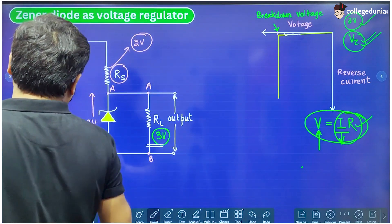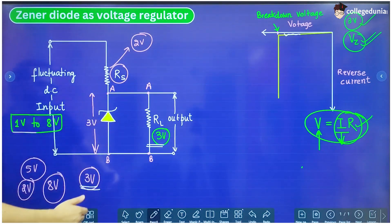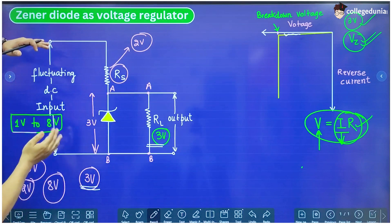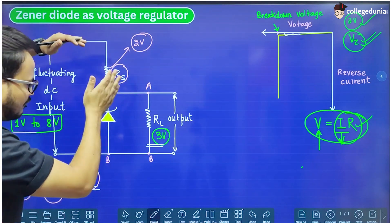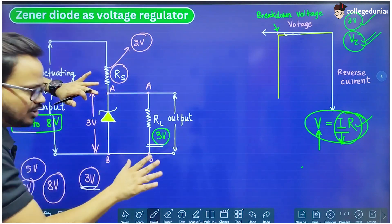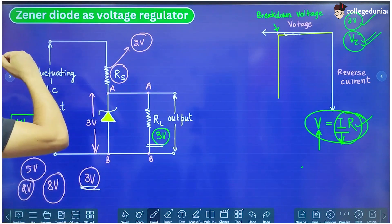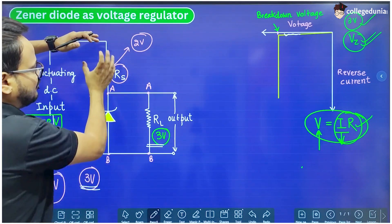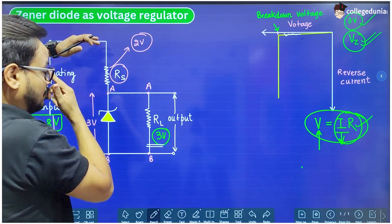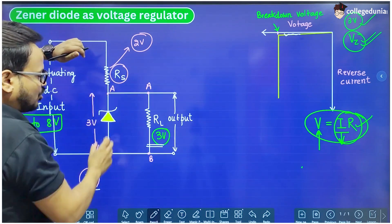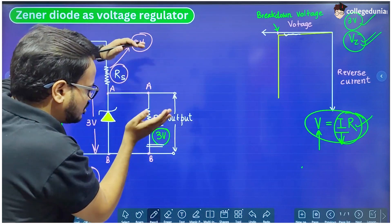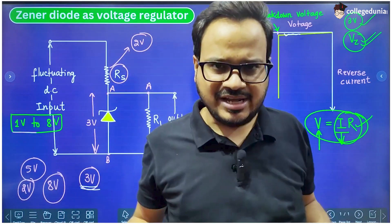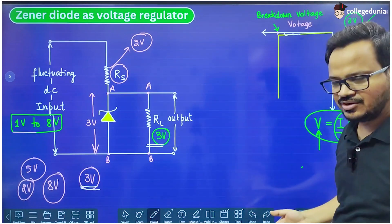Once the fluctuating voltage is increased beyond 3 volt, the voltage across the Zener diode is not going to increase beyond 3 volt. The extra voltage will be dropped across the resistance RS which is connected in series with the Zener diode, and we will get a constant output of 3 volt across the output LED or any other device that we have connected.